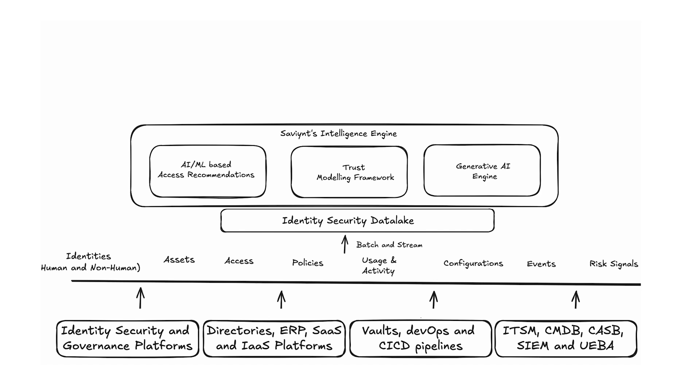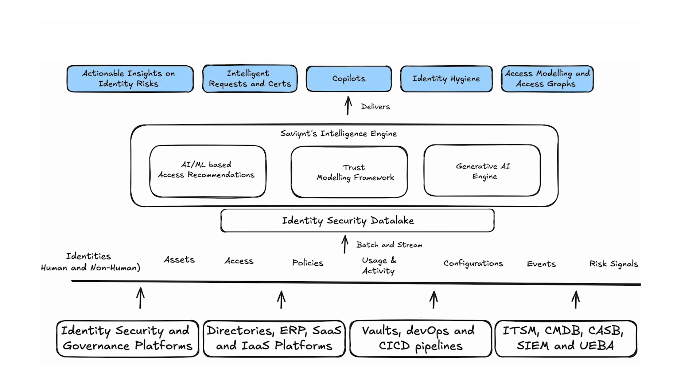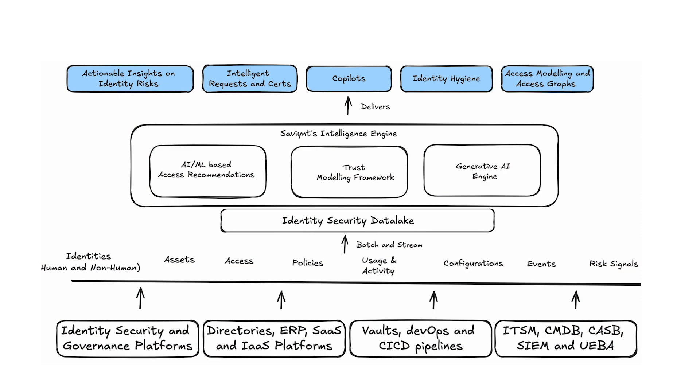What does this architecture deliver in value to our customers? Number one, we allow customers to derive actionable insights into their identity risk. This is a key value add because identity risks are pretty much scattered — it's very hard to pinpoint the risky elements in your identity ecosystem — and then you can take meaningful actions to reduce your risk posture and improve compliance and audit readiness.